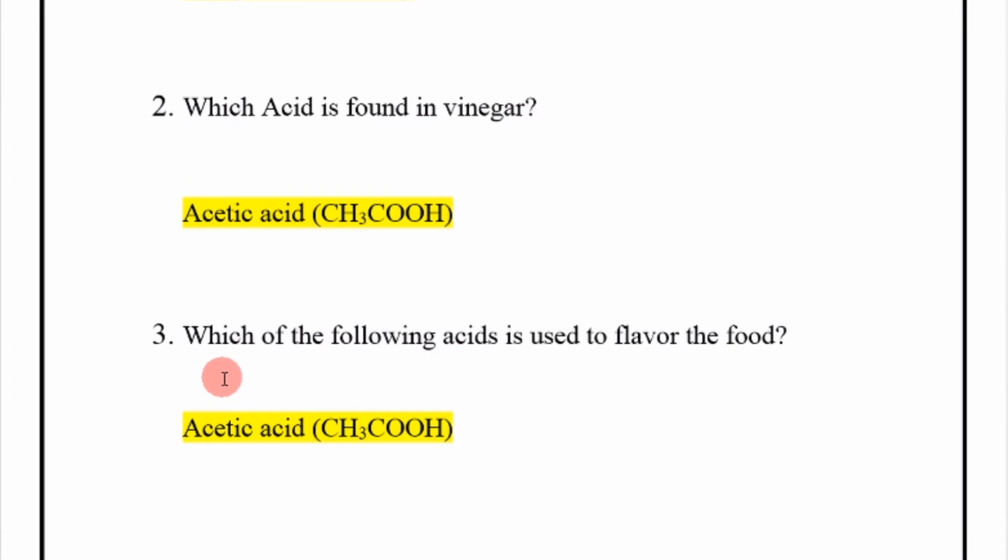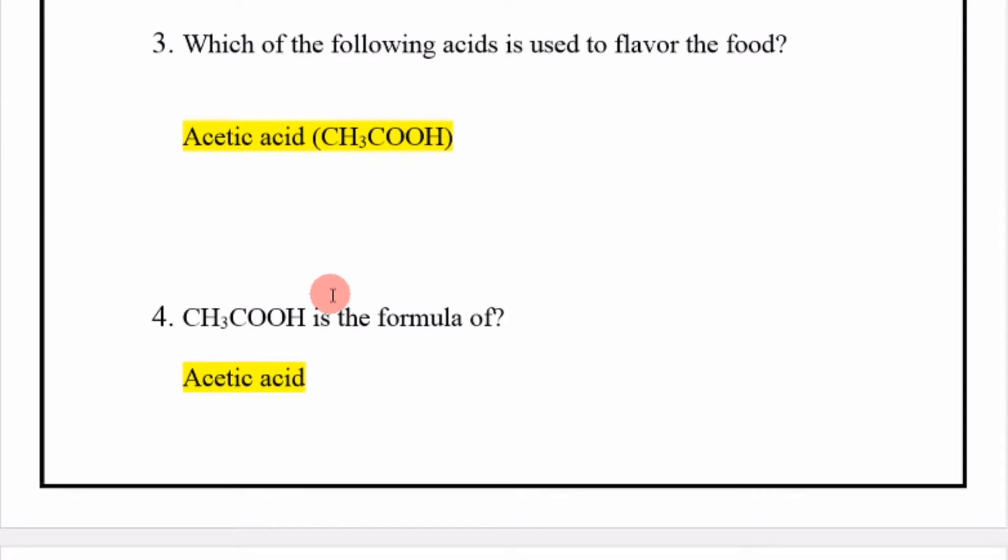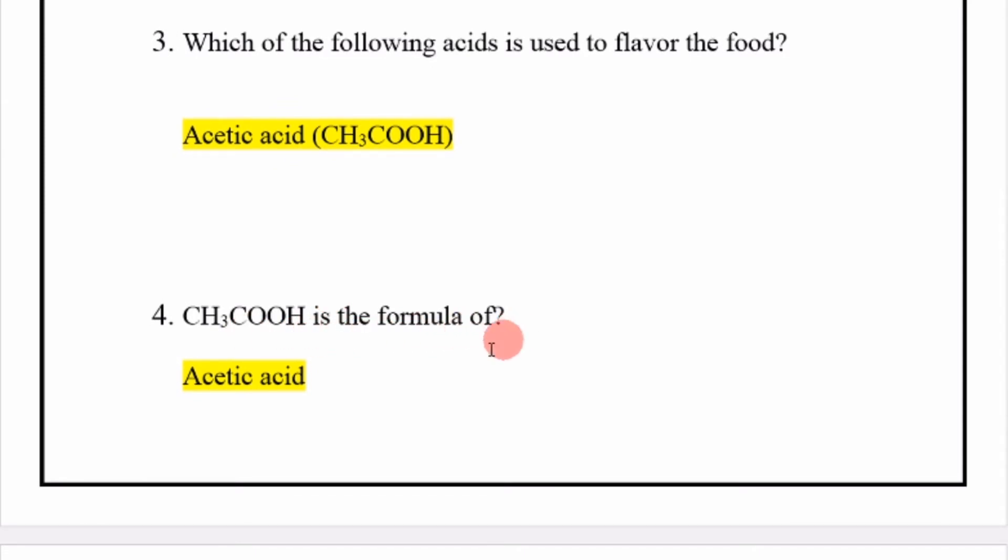Which of the following acid is used to flavor the food? Acetic acid. Which of the following acid is used to flavor the food? Acetic acid. Next, CH3COOH is the formula of acetic acid. CH3COOH is the formula of acetic acid.